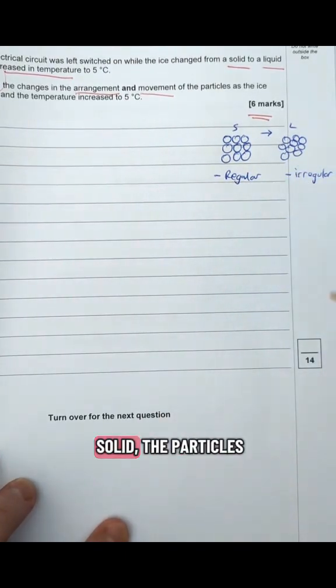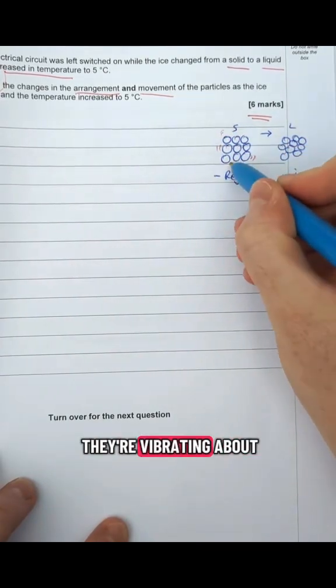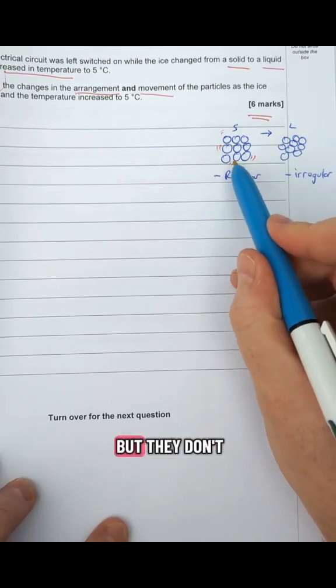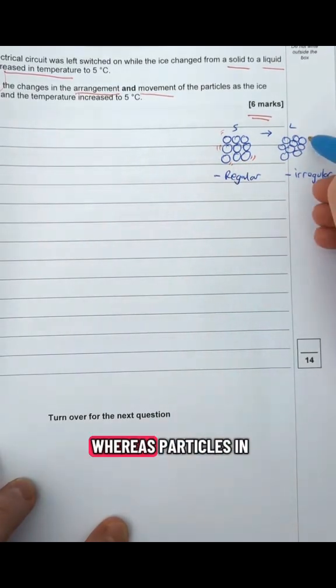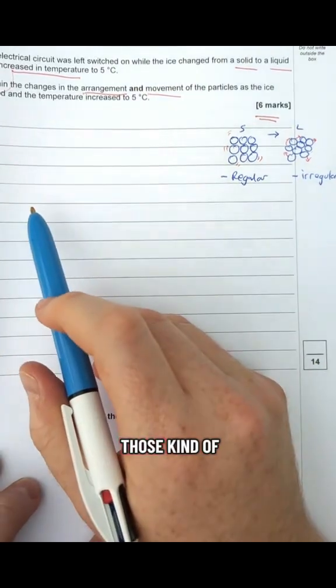the movement of the particles. In a solid, the particles aren't stationary - they are moving but they're vibrating about a fixed point. They go back and forth, up and down, left to right, but they don't actually go anywhere overall. Whereas particles in liquid do move past each other - they move freely.